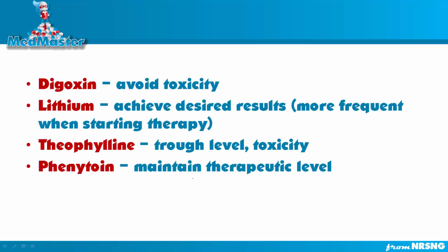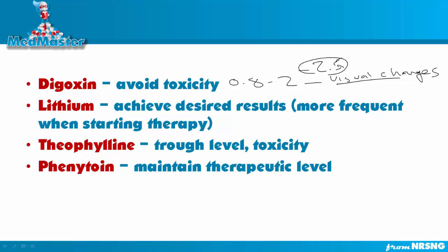Now, why do we test these levels in these specific drugs? With digoxin, we want it to stay at 0.8 to 2 to avoid toxicity. If you get a pharmacology question on the NCLEX, there's a good chance it'll be about digoxin toxicity. They may tell you the patient's digoxin level is 2.5 and they're experiencing visual disturbances — that halo or ring in their vision. That's a sign of digoxin toxicity, and the level is above the therapeutic range, confirming digoxin toxicity.